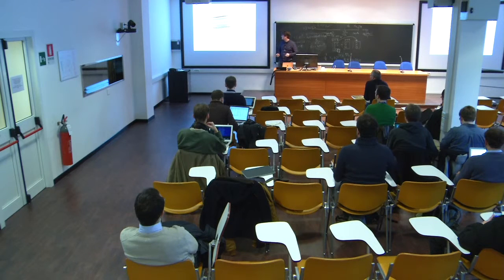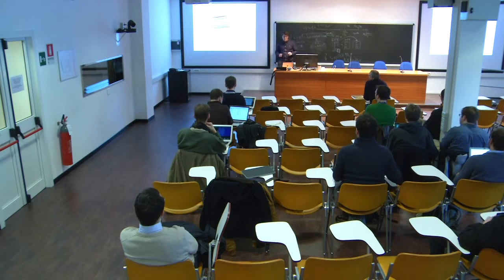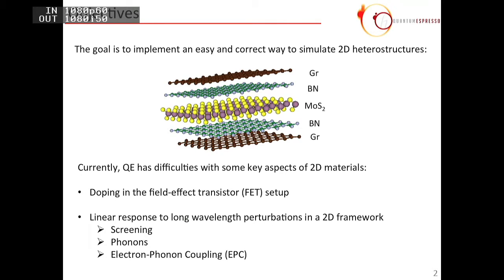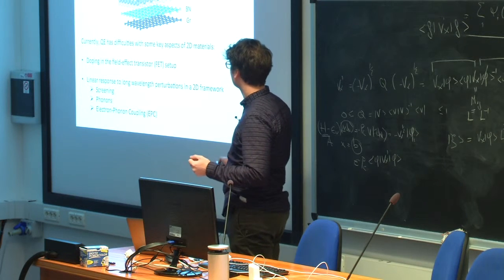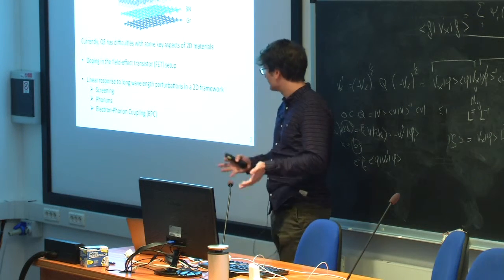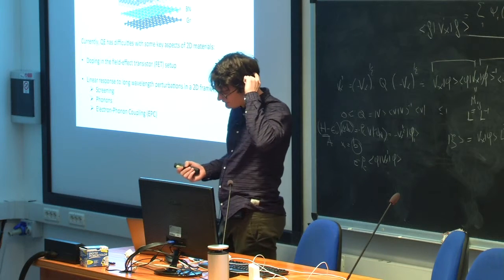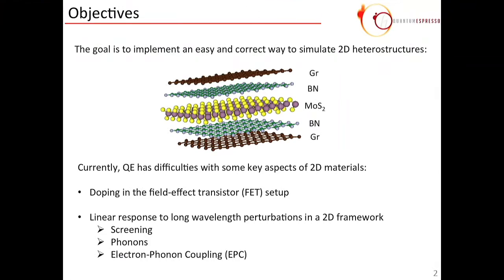The issue is that currently Quantum Espresso has a couple difficulties with some key aspects of 2D materials physics. The first one that we're going to talk about today is doping as it happens in the field effect transistor setup. The second thing is linear response of those 2D materials to long wavelength perturbations, and by linear response I mean electronic screening, phonons, and electron phonon coupling.